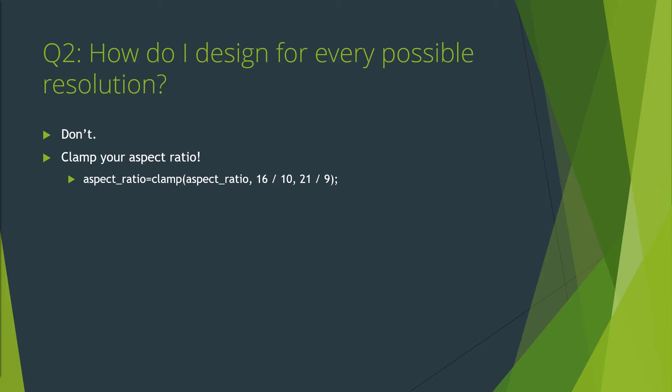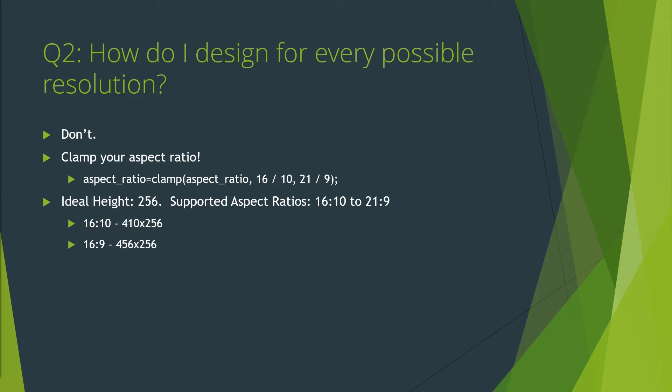With those two extremes, you can calculate your min and max resolutions and design your rooms appropriately. For example, if your game's ideal height is 256, you'll get these possible resolutions ignoring perfect pixel scaling: on 16 by 10, your resolution will be 410 by 256; on 16 by 9, 456 by 256; and on 21 by 9, it'll be 598 by 256. So when you design your levels, you know the height will always be 256, but the width will be somewhere between 410 and 598. That's a pretty big difference. If you're having trouble making a particular level or element of your game work with one of those extremes, maybe don't support it. Your 2D platformer doesn't need to support 21 by 9 monitors.